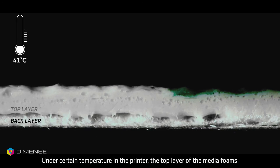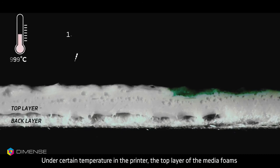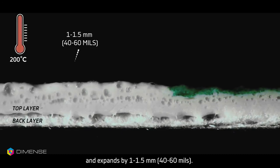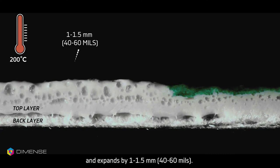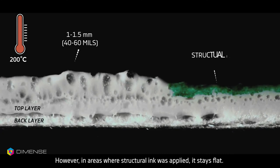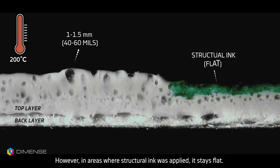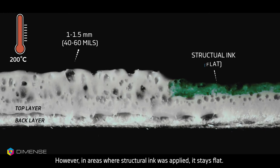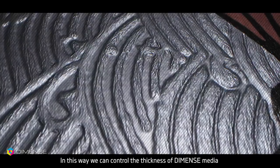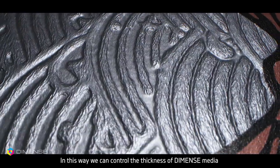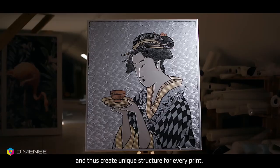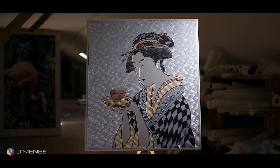Under certain temperature in the printer, the top layer of the media foams and expands by 1 to 1.5 mm. However, in areas where structural ink was applied, it stays flat. In this way, we can control the thickness of Dimens Media and thus create a unique structure for every print.